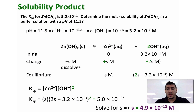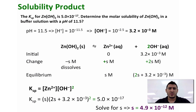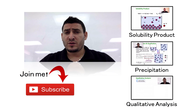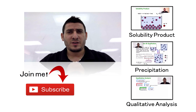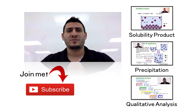The presence of OH⁻ in the buffer solution reduces the solubility of zinc hydroxide, which is why we have a very small number for the solubility. I hope this video was helpful — please like, share, and subscribe, and I will see you next time.